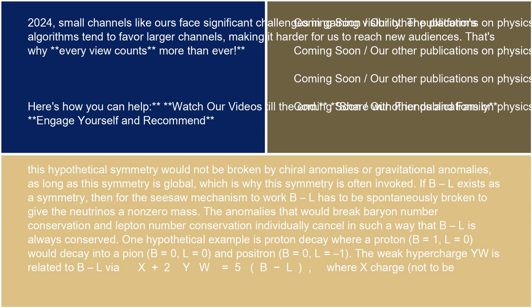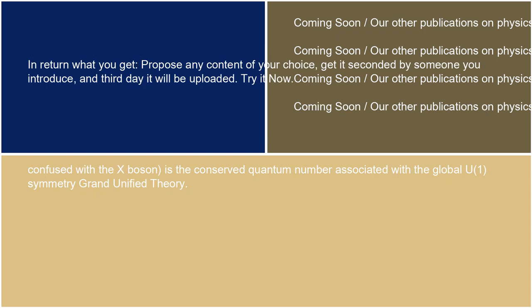The weak hypercharge Y_W is related to B-L via X + 2Y_W = 5(B minus L), where X charge — not to be confused with the X boson — is the conserved quantum number associated with the global U(1) symmetry in grand unified theory.